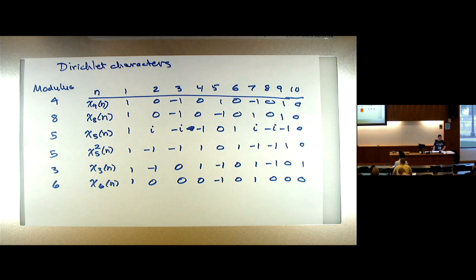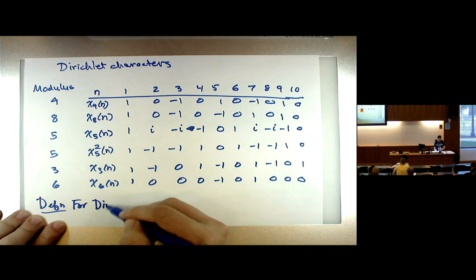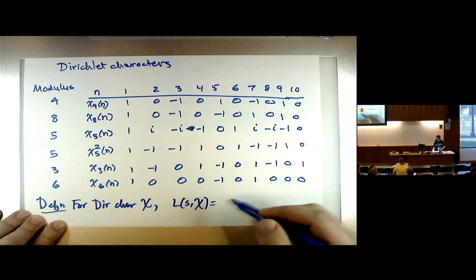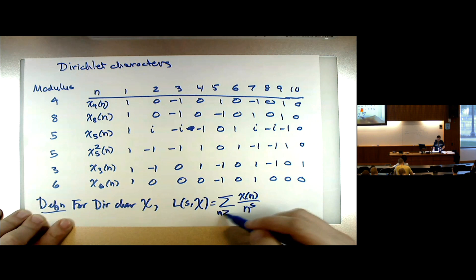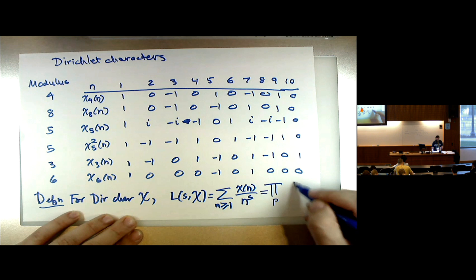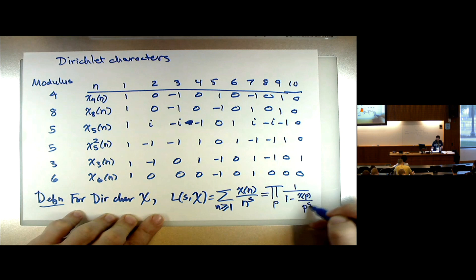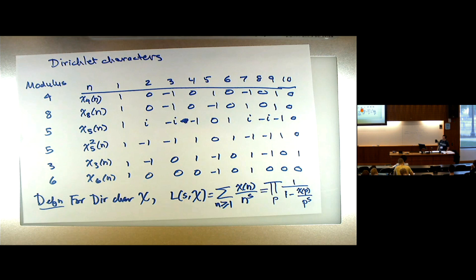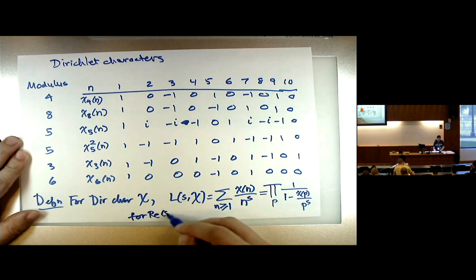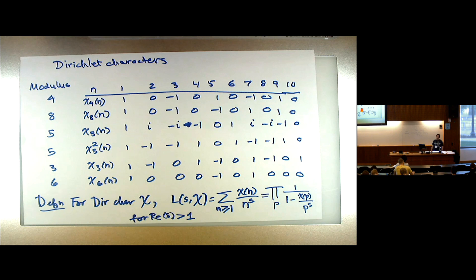As long as I have a character, for a Dirichlet character χ the L-function L(s, χ) is set to be the sum where the coefficients are the character values: ∑ χ(n)/n^s. Because χ is totally multiplicative it can be written as a product over primes: ∏_p 1/(1 − χ(p)/p^s). This is for real part of s greater than 1, like with the Riemann zeta function. If I use the trivial character mod 1, all the numerators are 1 — it's the Riemann zeta function.